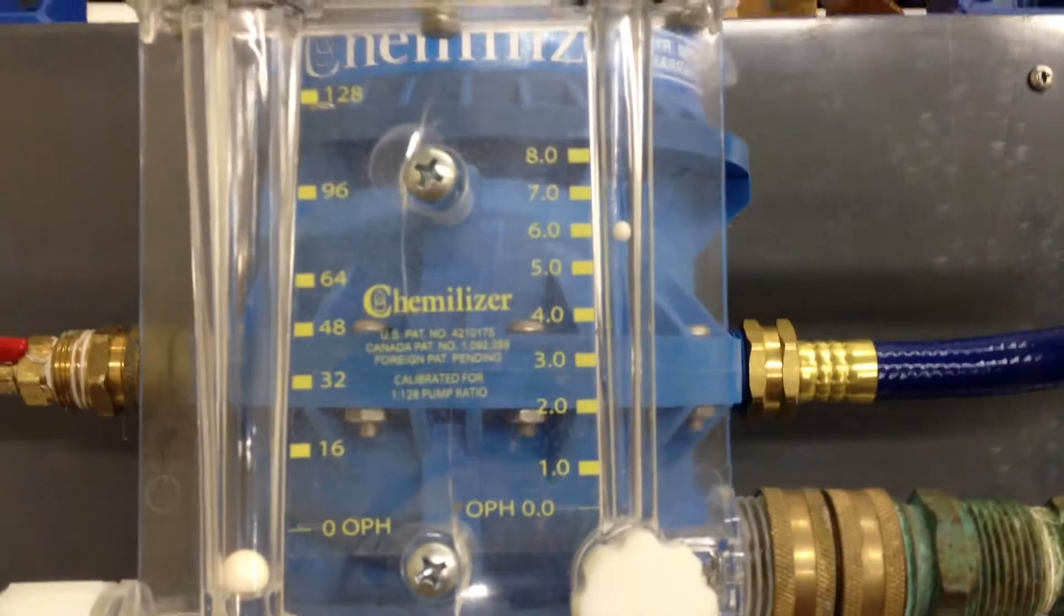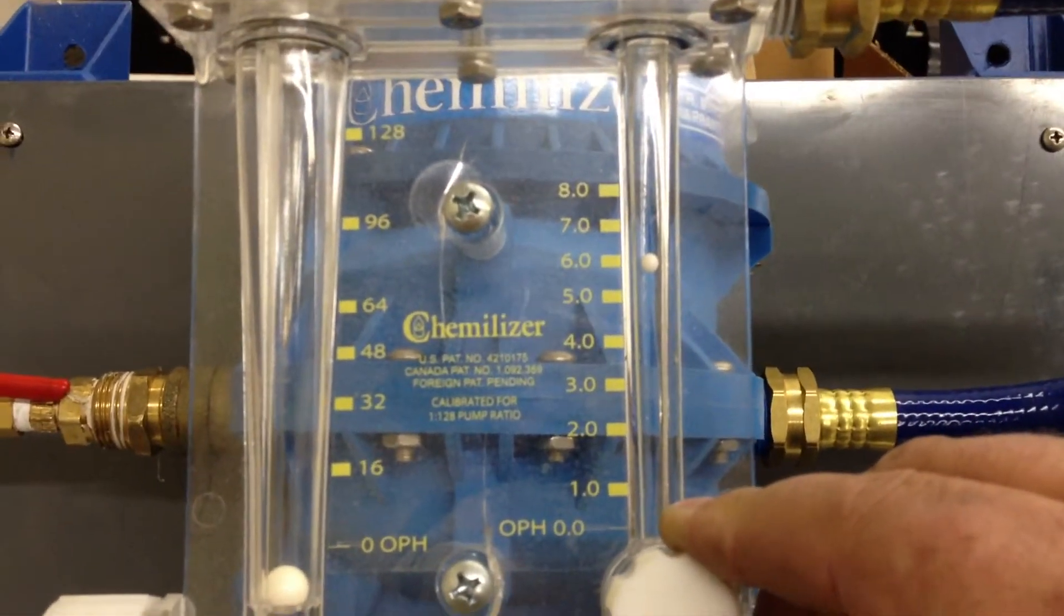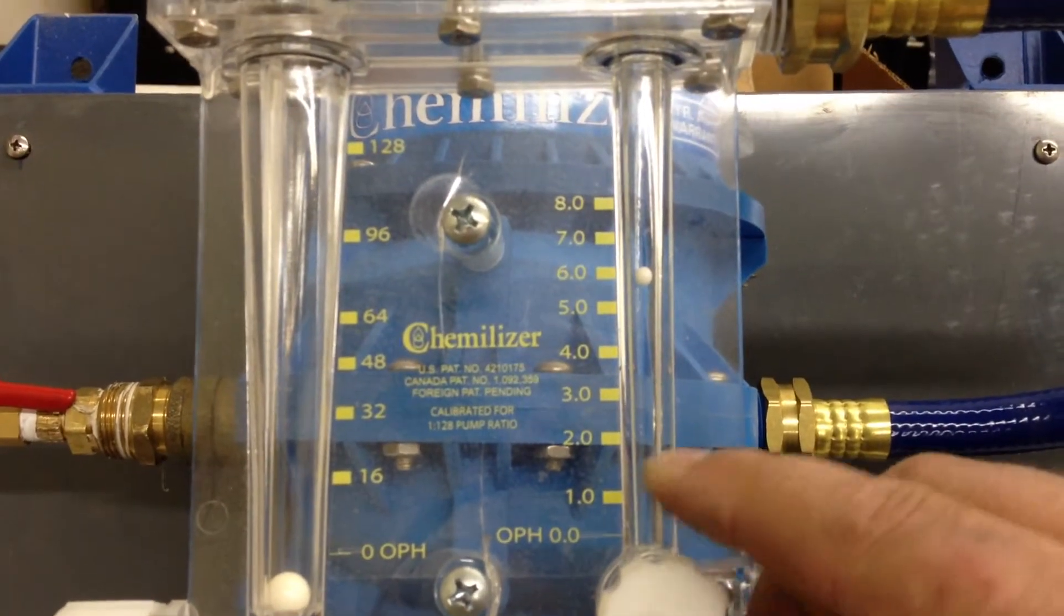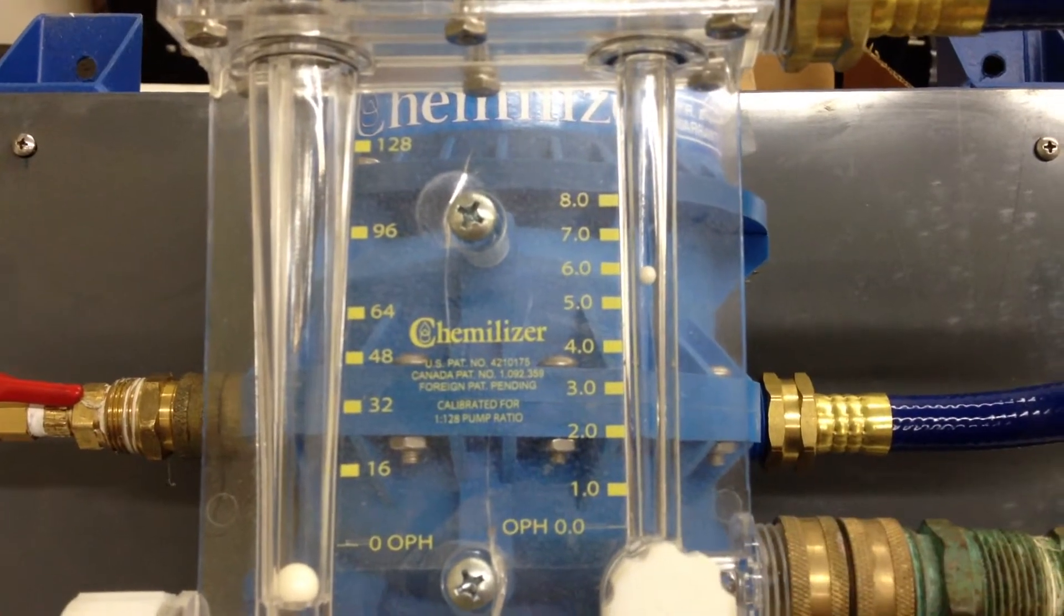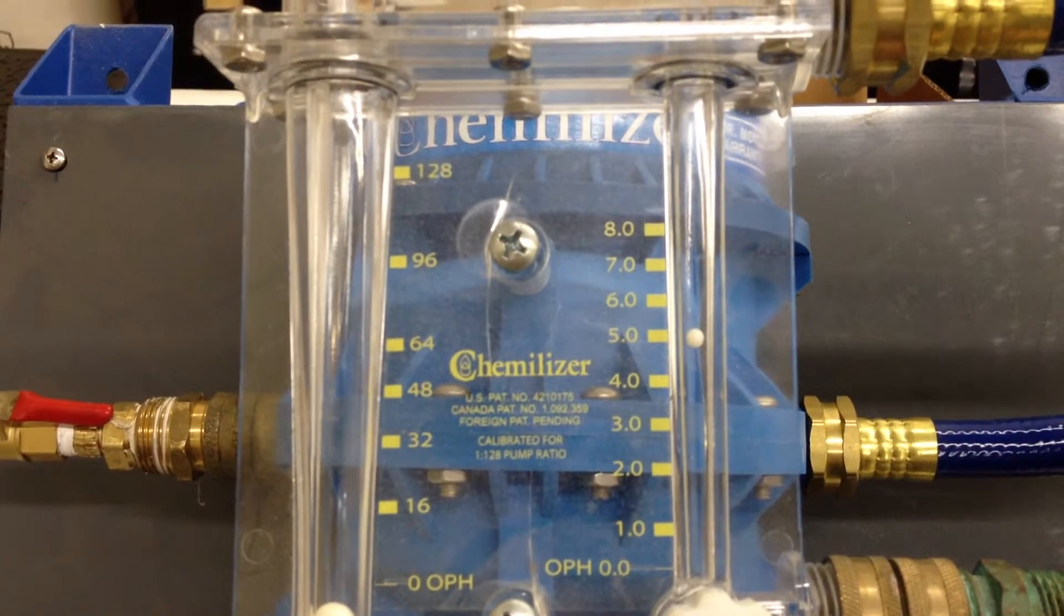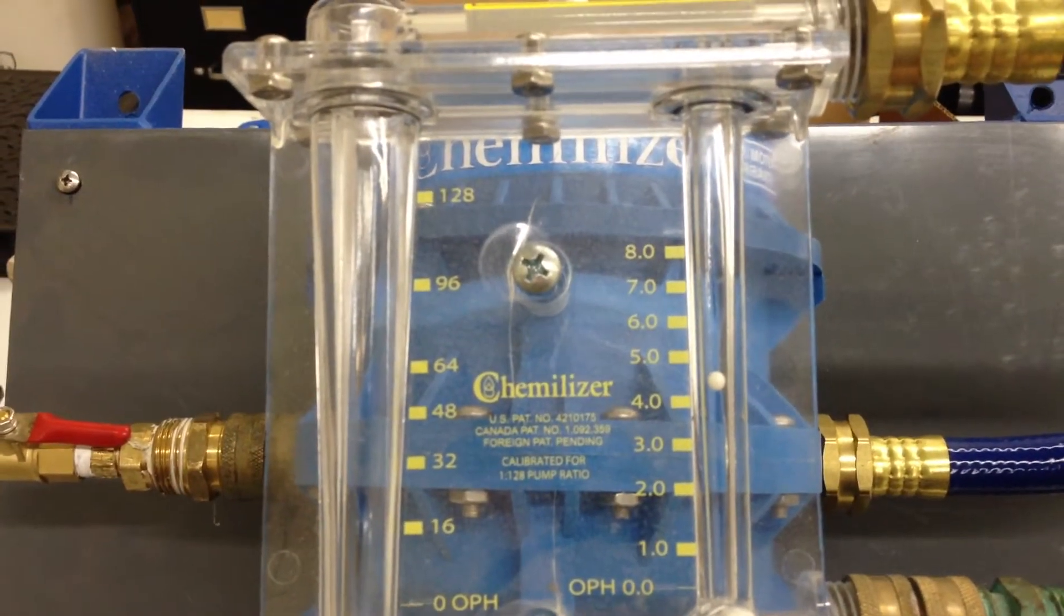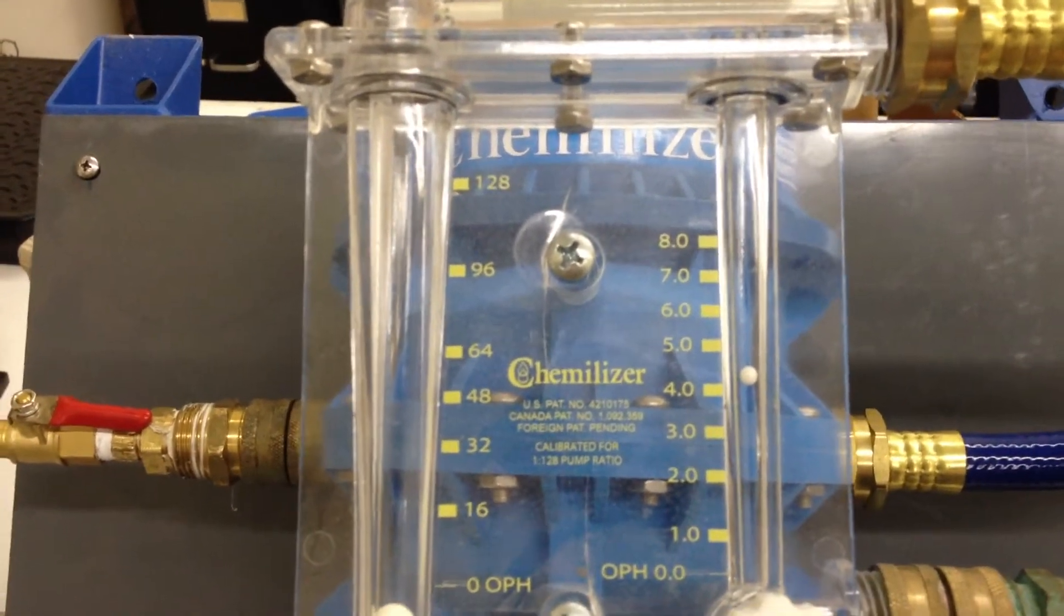Just to show you how it adjusts, if I start turning the air pressure down, you can actually see that the rotometer is starting to drop, and the pump is slowing way down.